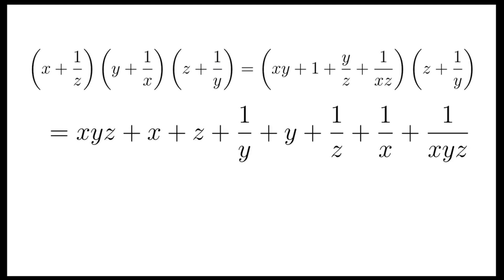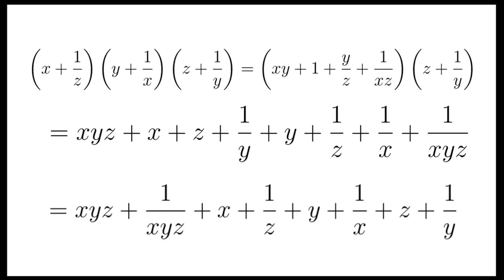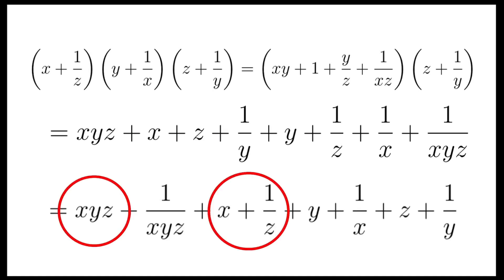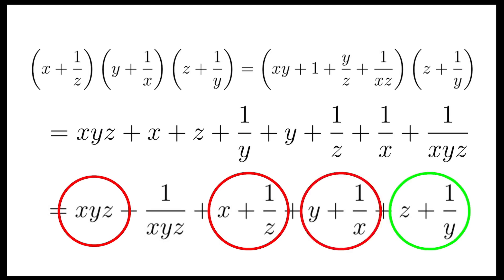Now after simplifying and regrouping the terms, the final product consists of x, y, z multiplied by x plus 1 over z, multiplied by y plus 1 over x, and of course z plus 1 over y — the expression that we are trying to solve.